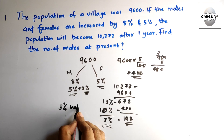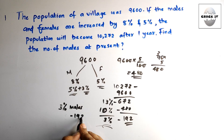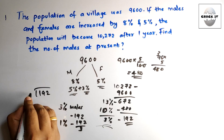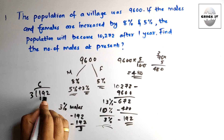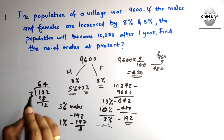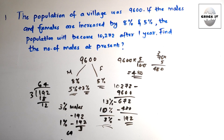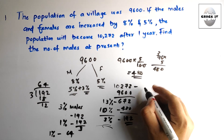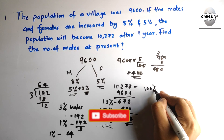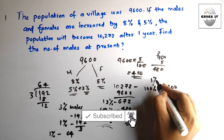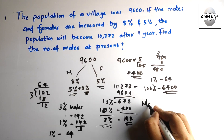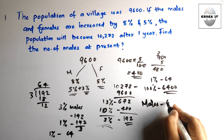3% of males = 192. So 1% of males = 192 ÷ 3 = 64. Therefore 1% = 64, and 100% (total number of males) = 64 × 100 = 6400. The number of males is 6400.